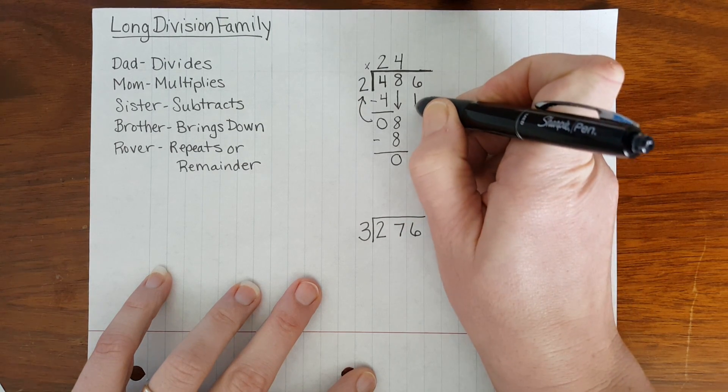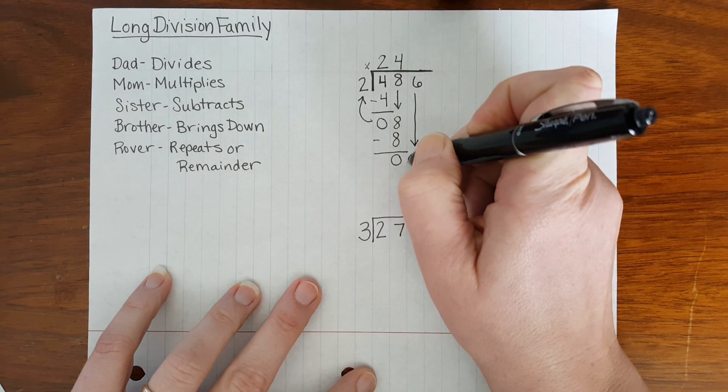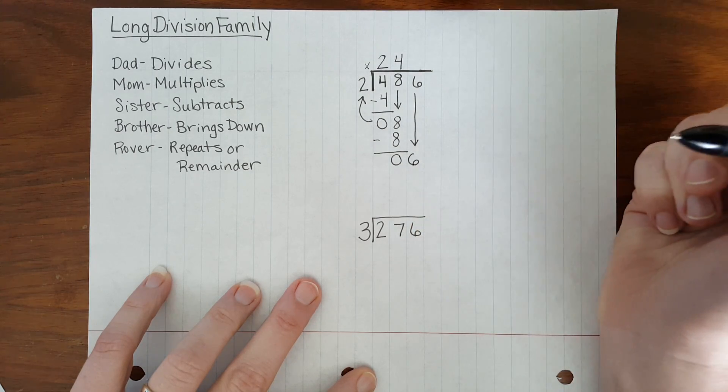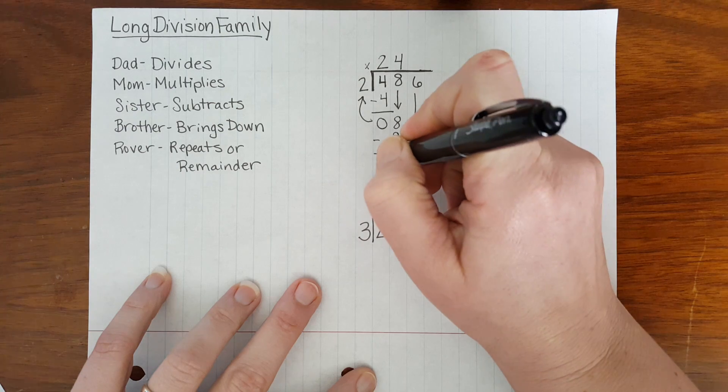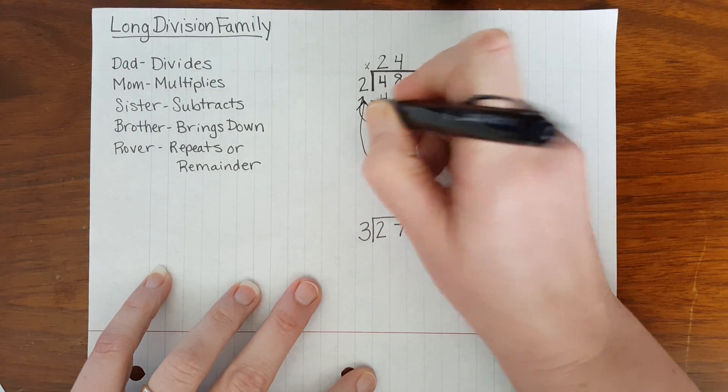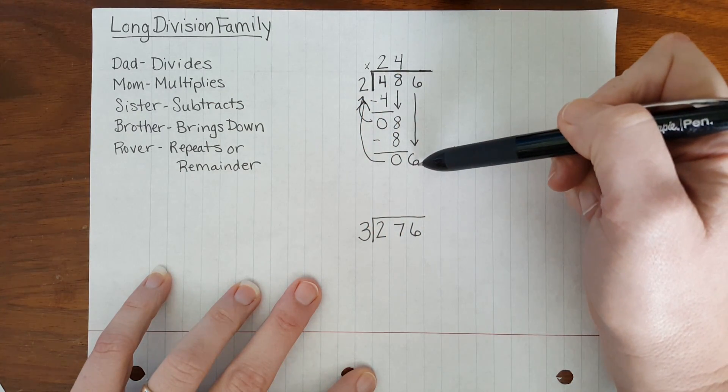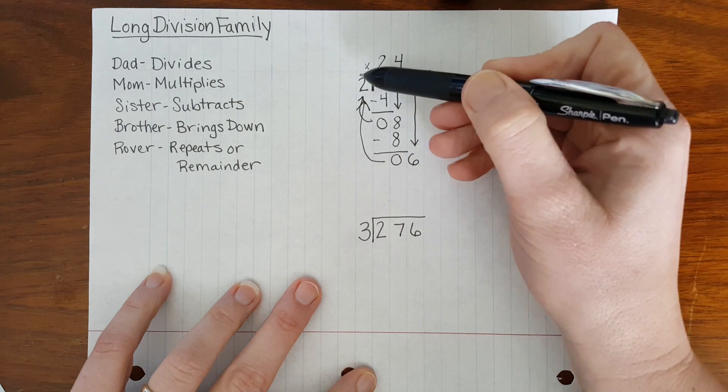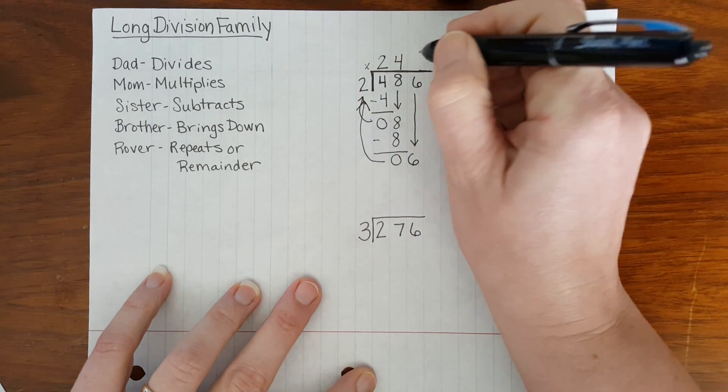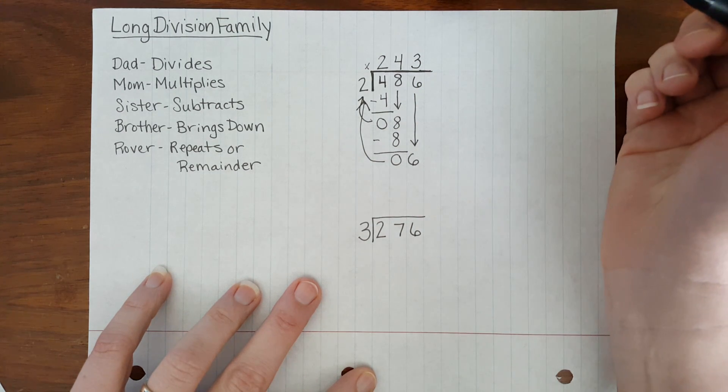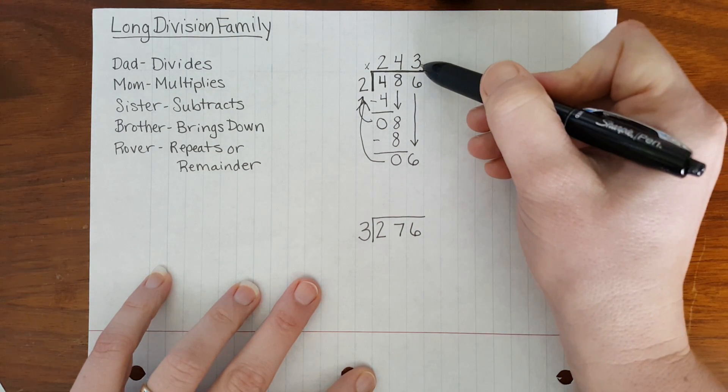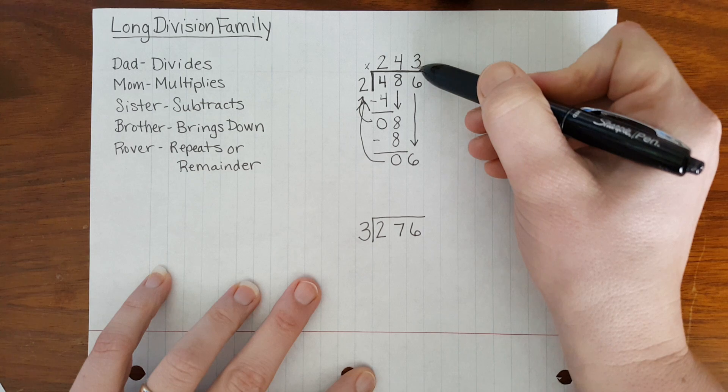Brother brings down the 6 and slides it right down to the answer sister found. And Rover can take that number and repeat. Dad then takes 6 and says 6 divided by 2 is equal to 3. 6 divided by 2 is a simple math fact, a division fact, that mom can then double-check with multiplication.